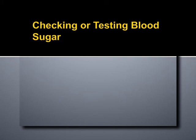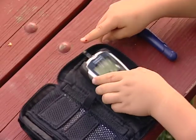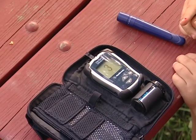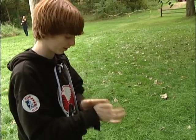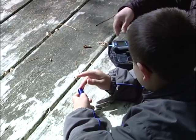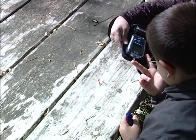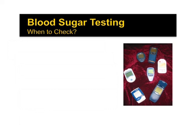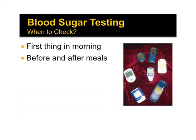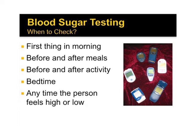Most people with diabetes check their blood sugar regularly with a meter or home glucose monitor. Checking blood sugars, sometimes called testing or monitoring, is a vital step in managing diabetes. It gives the person with diabetes important information to help make decisions about food, activity, and insulin. To check blood sugar, the person must have clean hands for accurate results, insert a special test strip into a meter, and apply a small drop of blood to the test strip. After a few seconds, the meter will display the blood sugar reading. Most people check blood sugar at different times during the day: first thing in the morning, before and after meals, before and after activity, at bedtime, and anytime the person feels high or low.